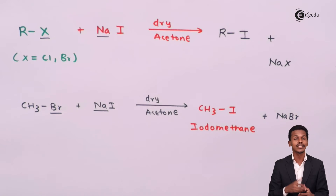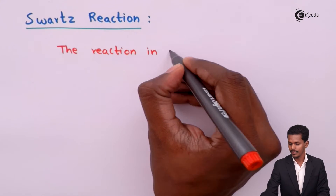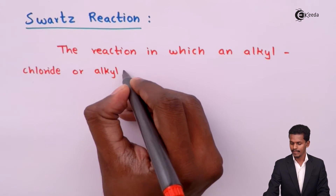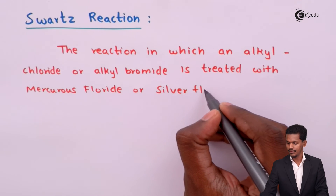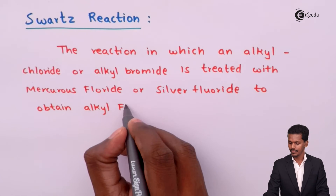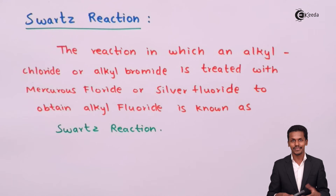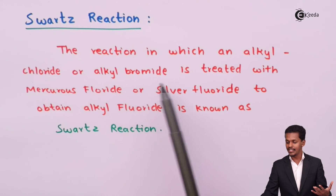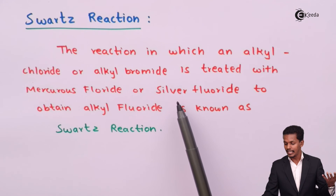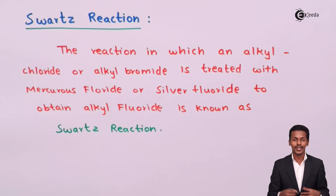Now let us talk about the next part of halogen exchange reaction, that is the Swartz reaction. The Swartz reaction is the reaction in which an alkyl chloride or alkyl bromide is treated with mercurous fluoride (Hg2F2) or silver fluoride (AgF) so as to obtain an alkyl fluoride.